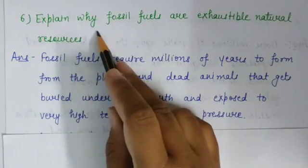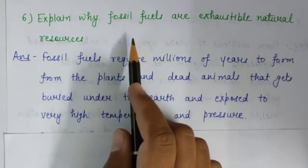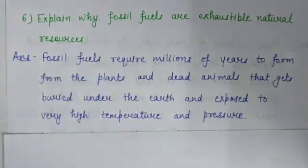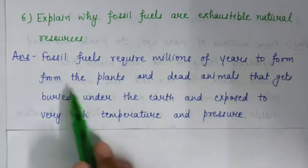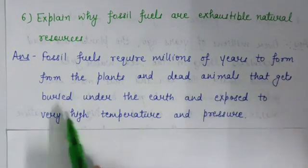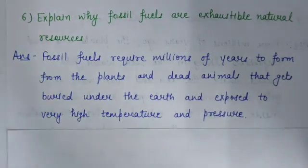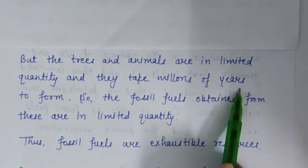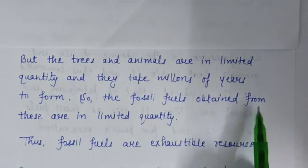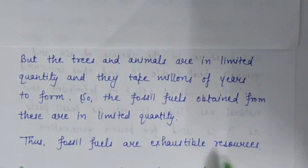Question number 6 is: explain why fossil fuels are exhaustible natural resources. Fossil fuels require millions of years to form from plants and dead animals buried under the earth and exposed to very high temperature and pressure. The trees and animals are in limited quantity and take millions of years to form, so fossil fuels are found in limited quantity — that's why they are exhaustible resources.